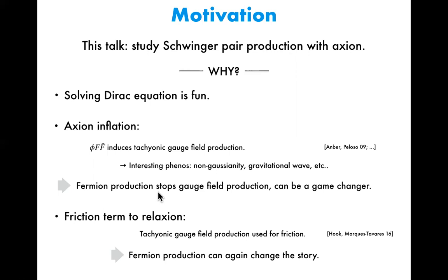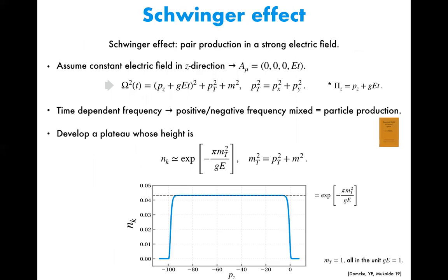So in order to understand this whole system, you inevitably have to study this kind of fermion production process. I just commented on axion inflation, but the same can be said of the reheating model, if you use the tachyonic gauge field production as a friction term. These are the motivations. And in this talk, as I said, I will discuss the Schwinger effect in the presence of the axion.